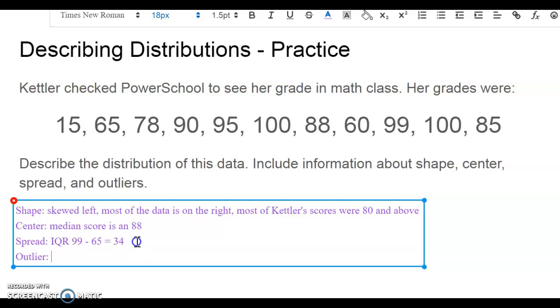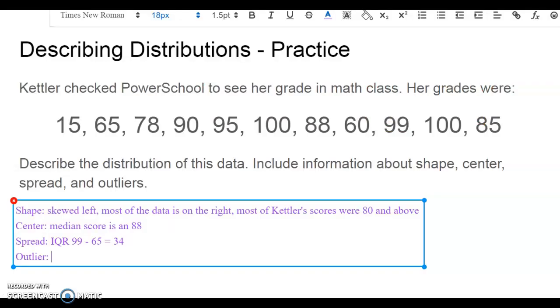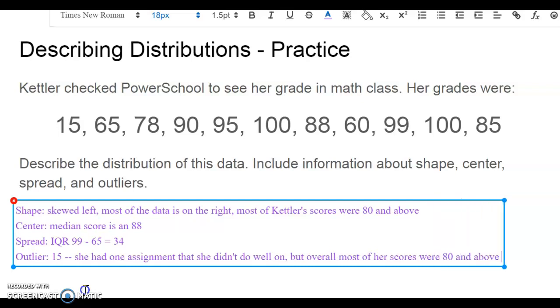And then lastly, we want to think about any outliers that she has. And we do see that she does have an outlier at 15. So she had one really low score of 15, but most of her assignments consistently scored at an 80 or above. So the outlier is 15, and this means that she had one assignment that she didn't do well on, but overall most of her scores were 80 and above.